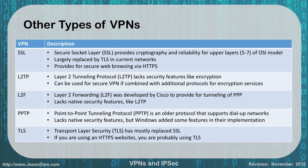L2TP is our Layer 2 Tunneling Protocol. It lacks security features like encryption — it was a very early form of VPN, but you can still use it with a secure VPN if you combine it with other things to provide encryption. Layer 2 Forwarding was developed by Cisco and provided tunneling of PPP traffic; it also lacks native security features like L2TP. For that reason, you probably will not see either of those on your exam because they're not popular in today's networks.